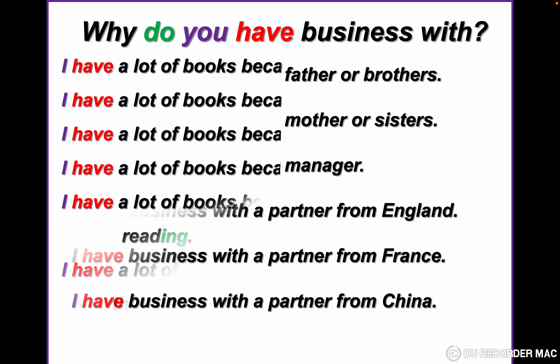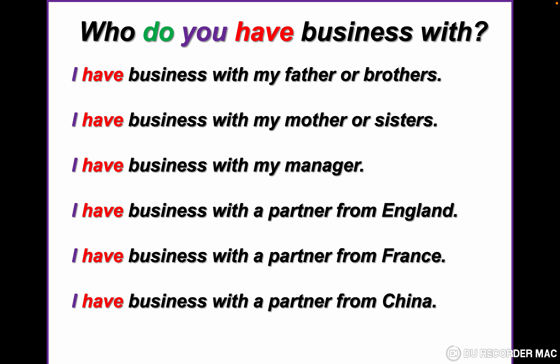We change the WH word to 'who'. Who do you have business with? It means who do you work with? I have business with my father, my brothers, my mother, or my sister. Because some people have a family business and they work together. I have business with my manager. I have business with a partner — a partner is the person who works with you in a business — from England, France, or China.